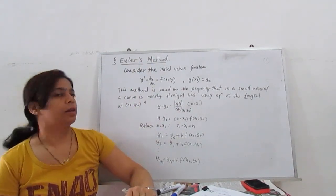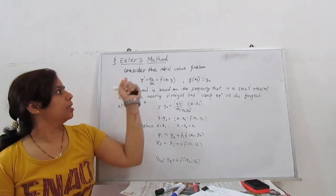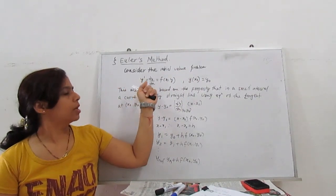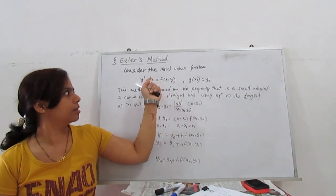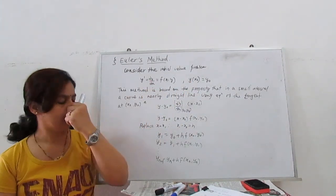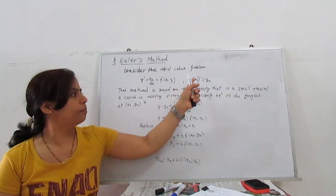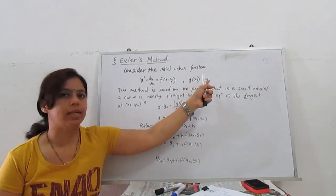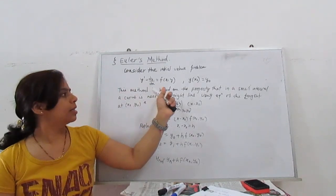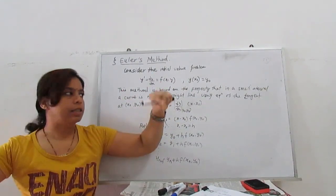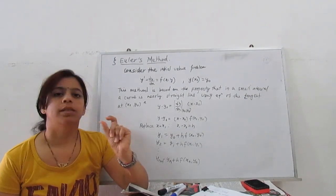Next method is the Euler method. Which concept is this method based on? Consider the initial value problem: our given function is y' or dy/dx = f(x, y). This is a first-order derivative with initial value y(x0) = y0, meaning at point x0, the value of the function y is y0. This method is based on the property that in a small interval, the curve seems to be a straight line.